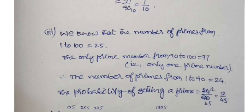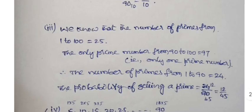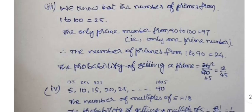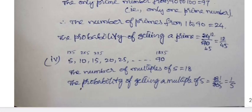Part 3: We know that the number of primes from 1 to 100 is 25. The only prime number from 90 to 100 is only 97, there is only one prime number. So 1 to 100 there are 25 prime numbers, 90 to 100 there is only one prime number, so 1 to 90 the number of prime numbers is 25 minus 1, that's 24 prime numbers. The probability of getting a prime number is 24 by 90, that is 12 by 45.